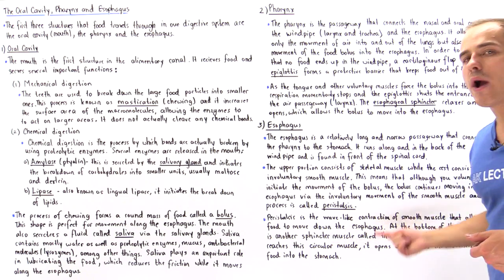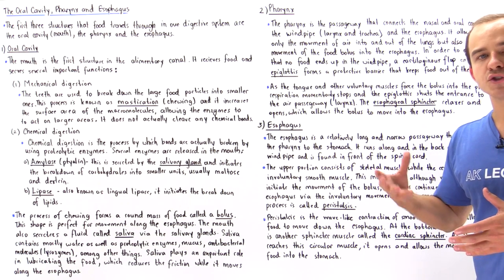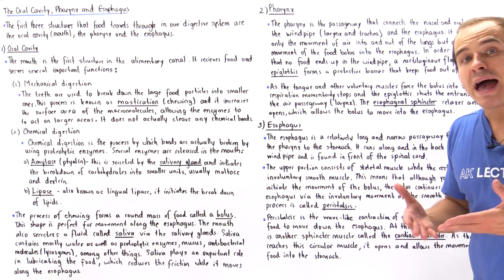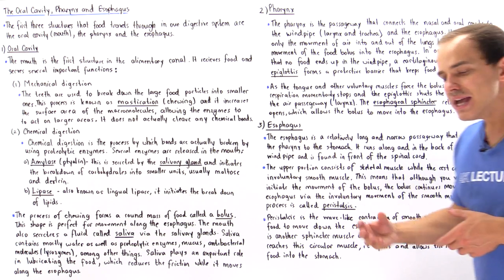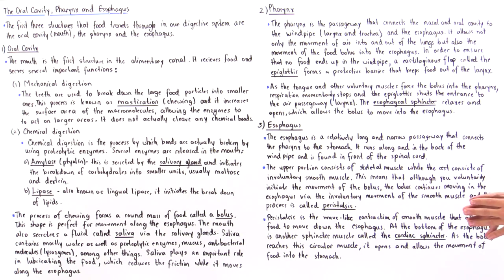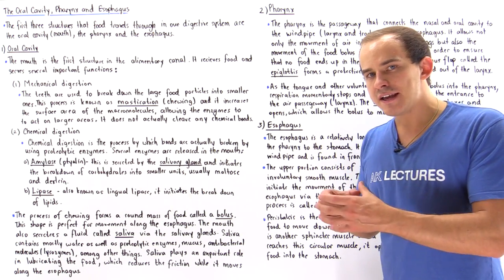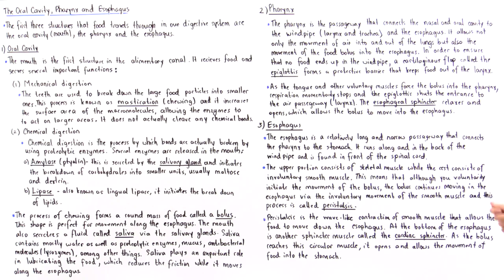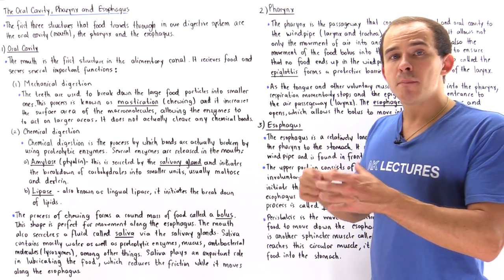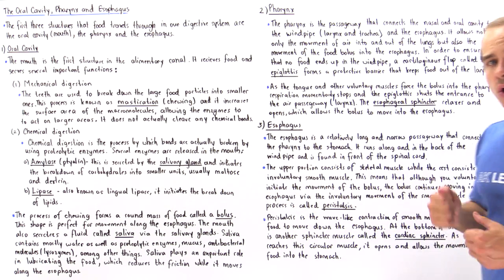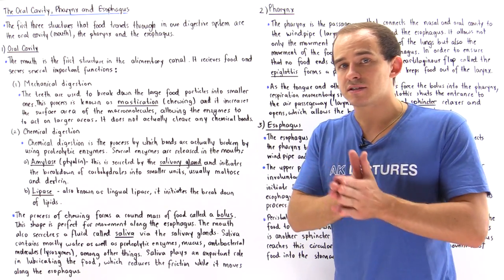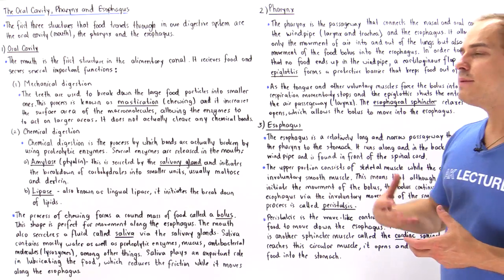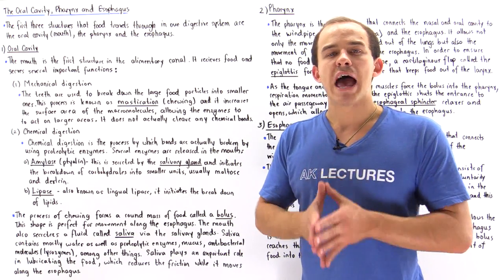This process — the wave-like contraction of smooth muscle that propels food down the esophagus — is known as peristalsis. Once the bolus reaches the bottom of the esophagus, another sphincter called the cardiac sphincter opens and allows the bolus to move from the esophagus into the stomach. In the next lecture, we'll see how digestion of proteins begins in the stomach.